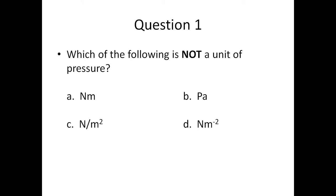Which of the following is not a unit of pressure? A: Nm, B: Pa, C: N over m squared, and D: Nm to the negative two.